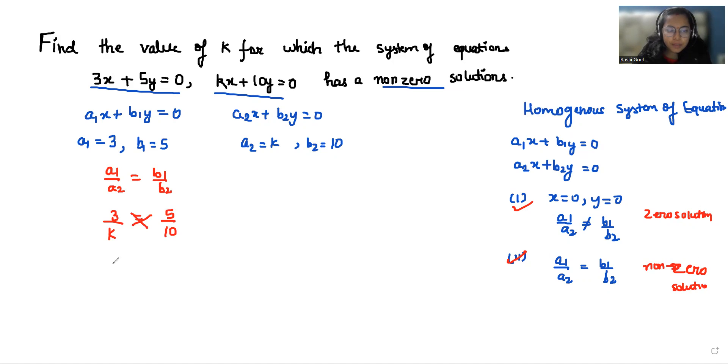So if I do cross multiplication, 3 times 10 equals 5 times k. So 30 equals 5k. If I divide both sides by 5, the value of k will be 6.